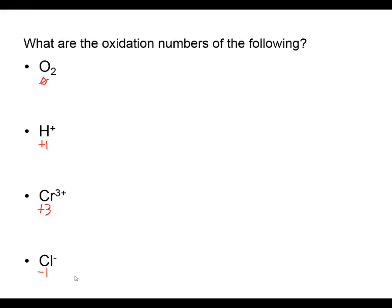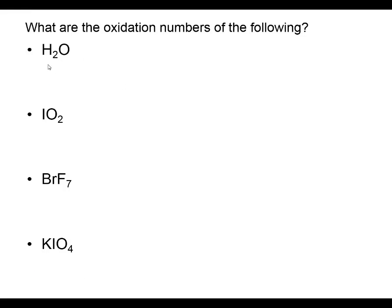Now let's consider compounds with multiple types of atoms. When I have water H₂O, hydrogen gets a plus one oxidation number since it's not a metal hydride or elemental. Since there are two hydrogens, the total is plus two. The oxidation number for oxygen in water should be a negative two - not a peroxide - and plus two plus negative two adds up to the neutral charge of zero.